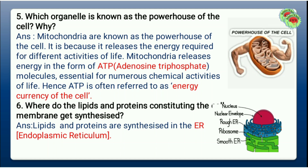Exercise Question 5: Which organelle is known as the powerhouse of the cell, and why? The powerhouse of the cell is mitochondria — it is also called the 'boss of the cell.' Mitochondria are known as the powerhouse because they release energy required for the different activities of life. Mitochondria release energy in the form of ATP, that is adenosine triphosphate, which is essential for numerous chemical activities. Hence, ATP is often referred to as the energy currency of the cell.